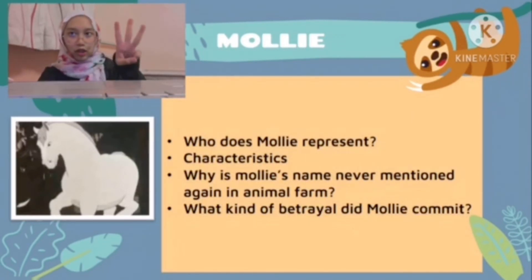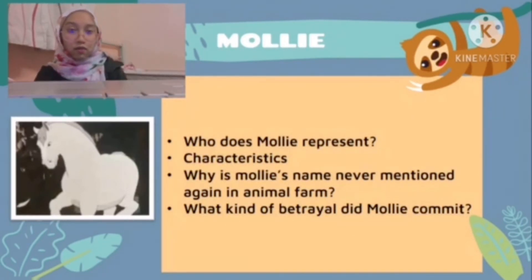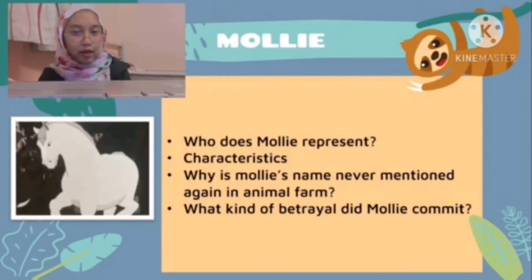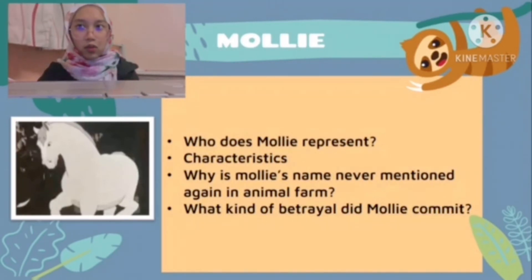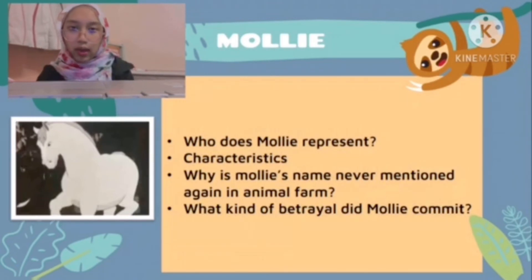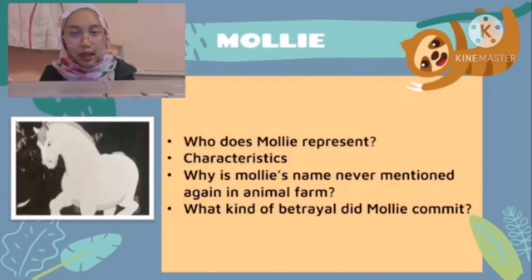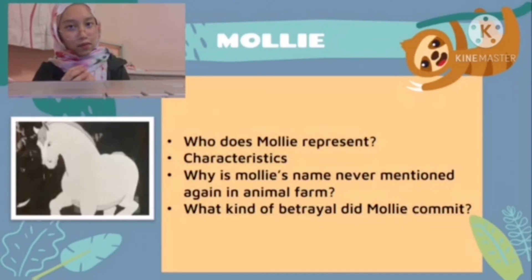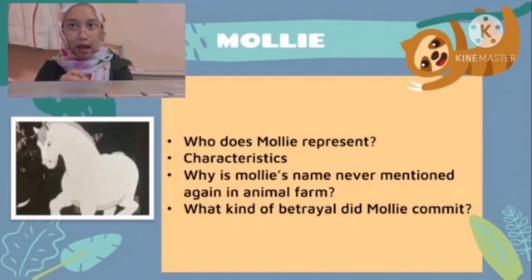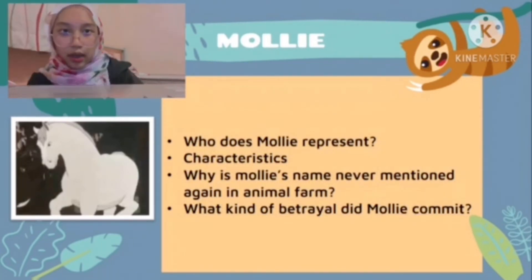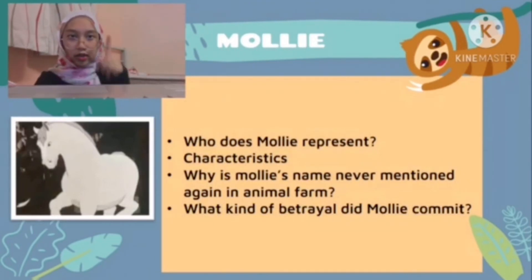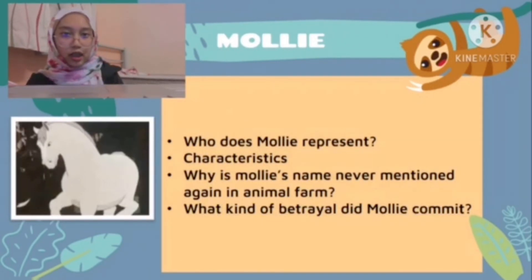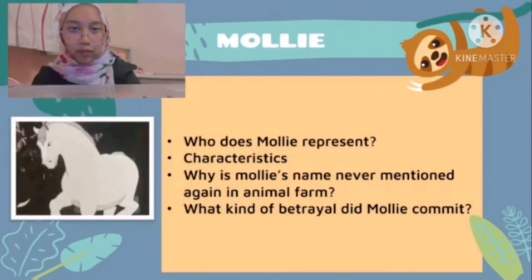In Chapter 3, she would vanish for hours on end and then reappear at mealtimes or in the evening after work was over, as though nothing had happened. But she made such excellent excuses and purred so affectionately that it was impossible not to believe in her good intentions. This can be found on page 19, paragraph 1, line 3.